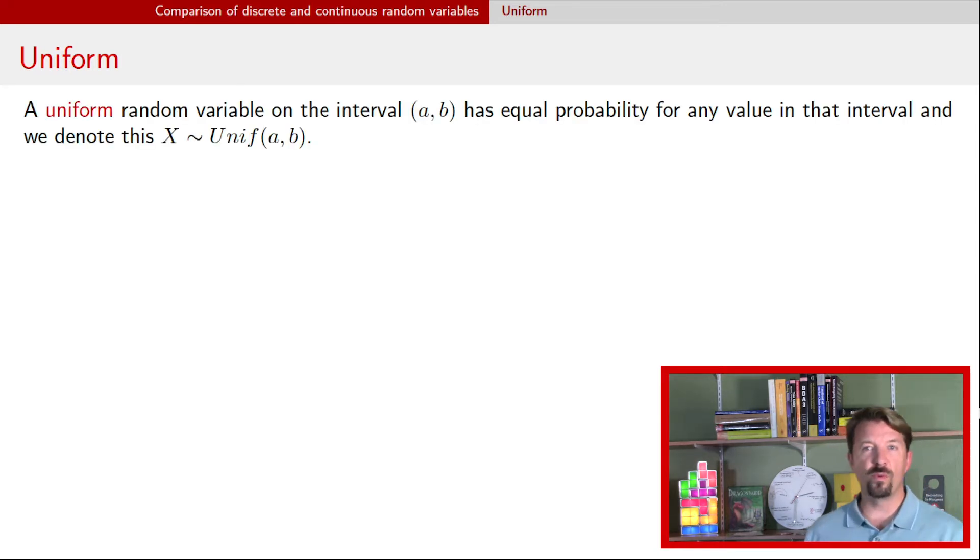Uniform random variables are probably the simplest continuous random variables you can think of. Basically the probability of getting any particular value is equal to the probability of getting any other particular value. And not just zero like I said before, but the fact is that the probability density function is flat or uniform. That's the key piece with a uniform random variable.